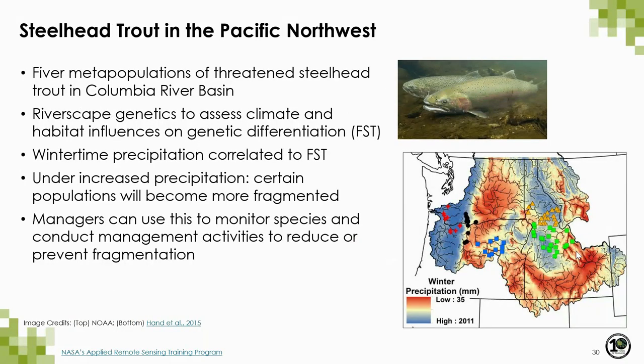The final example relates back to our riverscape analysis focus. Riverscape genetics modeling was used to assess whether climate and habitat variables were related to genetic differences in steelhead trout in the Columbia River Basin — a threatened species there. They found that wintertime precipitation was a dominant factor in genetic diversity. Further vulnerability assessments indicate that increased precipitation under climate change may cause these populations to become more fragmented, which could help managers take action to prevent further fragmentation.